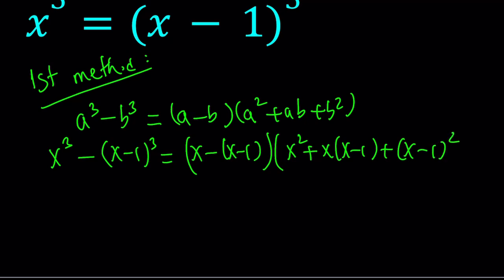And then, obviously, this is equal to 0. x minus x minus 1 is going to be 1 because you're going to negate the negative and x is going to cancel out. So we just have to focus on the second factor. That's going to be x squared plus x squared plus x squared, which is 3x squared minus x minus 2x. That's minus 3x plus 1.